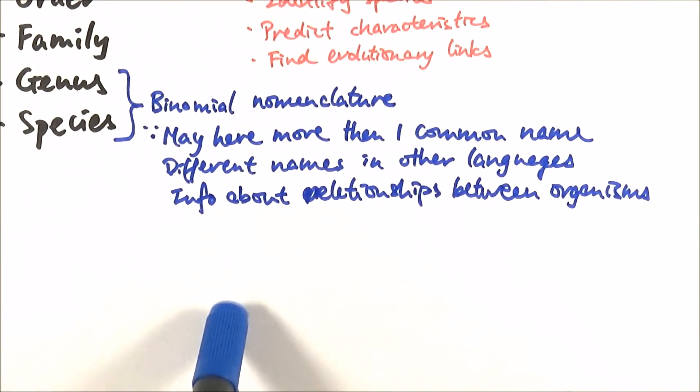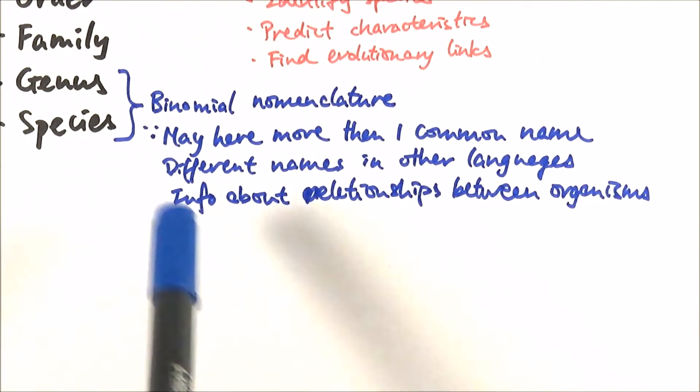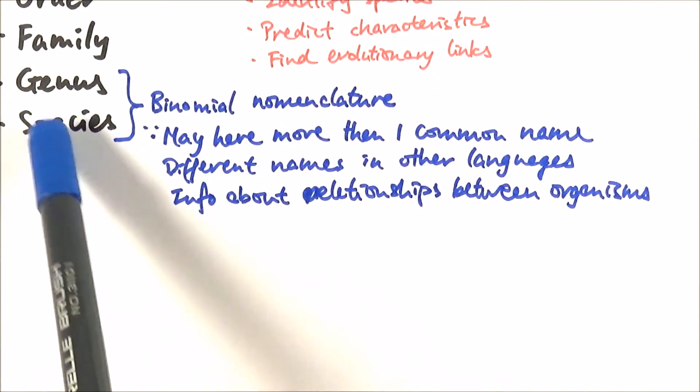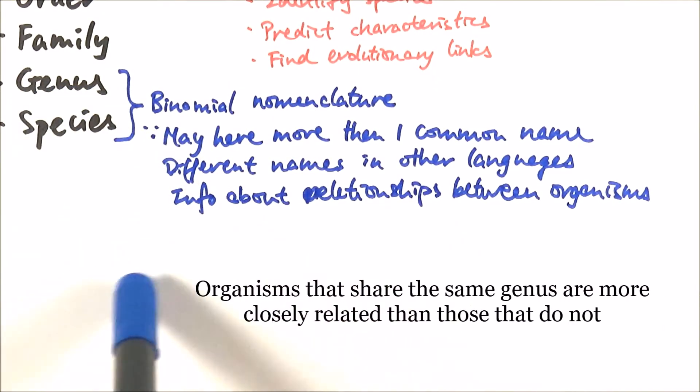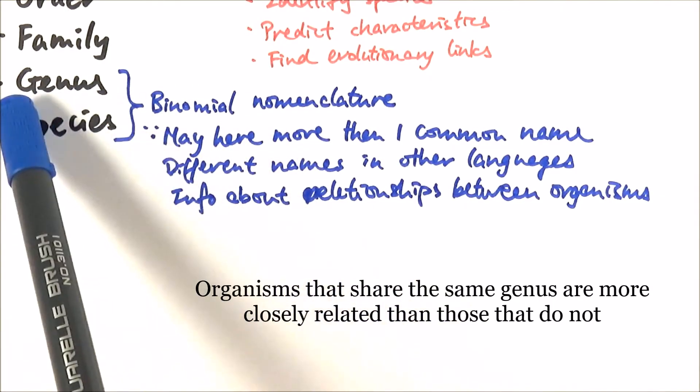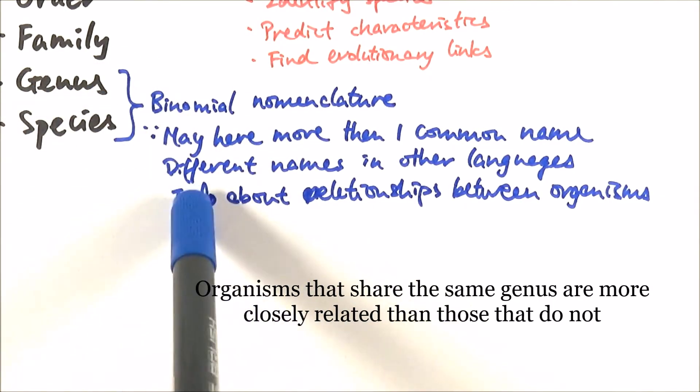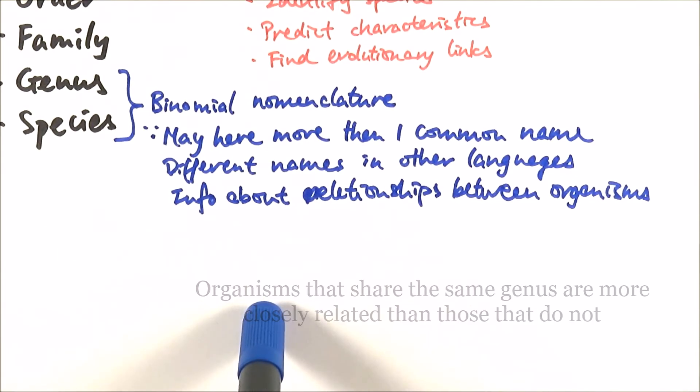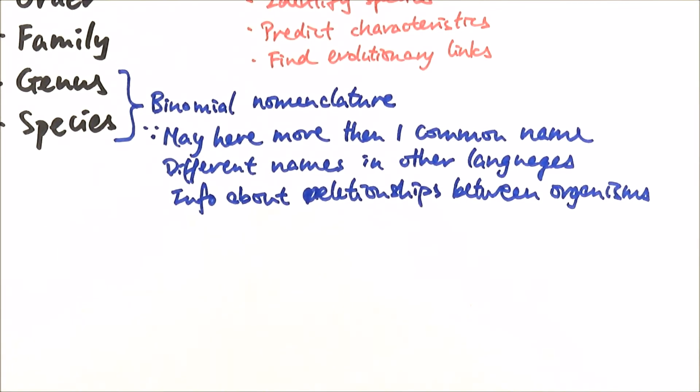On top of that we can actually use their binomial names to have a look at their relationships between organisms. We can have a look at it and see if they are of the same species or of the same genus. You can have different organisms with the same genus name but different species name. So we know that they are somewhat related but they are still two different species, which is quite useful when it comes to predicting characteristics or looking for evolutionary links.